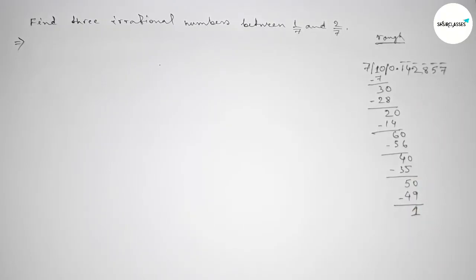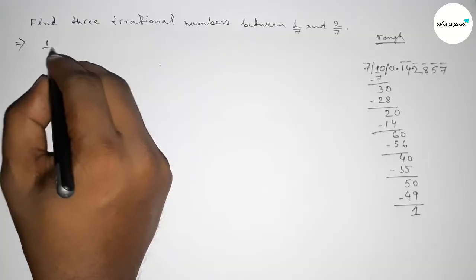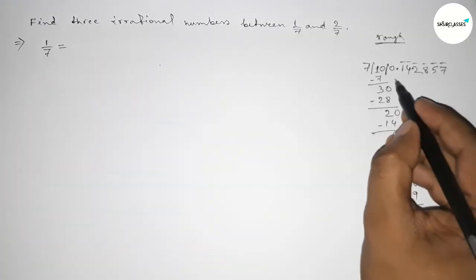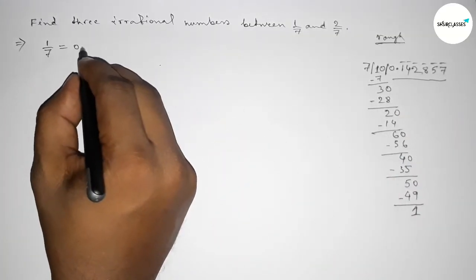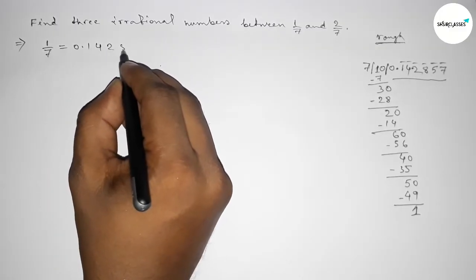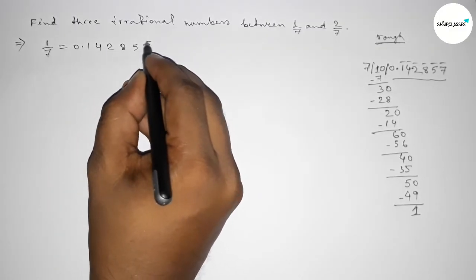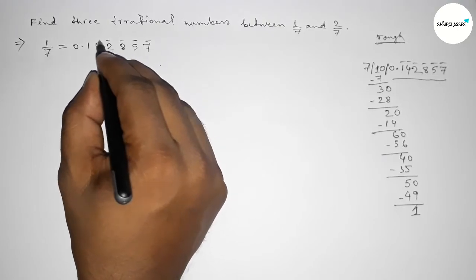So we can take recurring decimal. 1 over 7 equals 0.142857 and this is a recurring decimal.